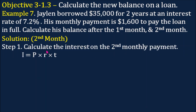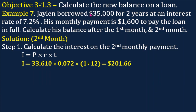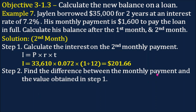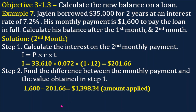For the second month, Step 1: calculate the interest on the second monthly payment. Now P is no longer $35,000, but $33,610 — the balance after the first month — times 0.072 times 1 divided by 12. That gives us $201.66. Step 2: the monthly payment is still $1,600 minus $201.66, so the amount applied is $1,398.34.